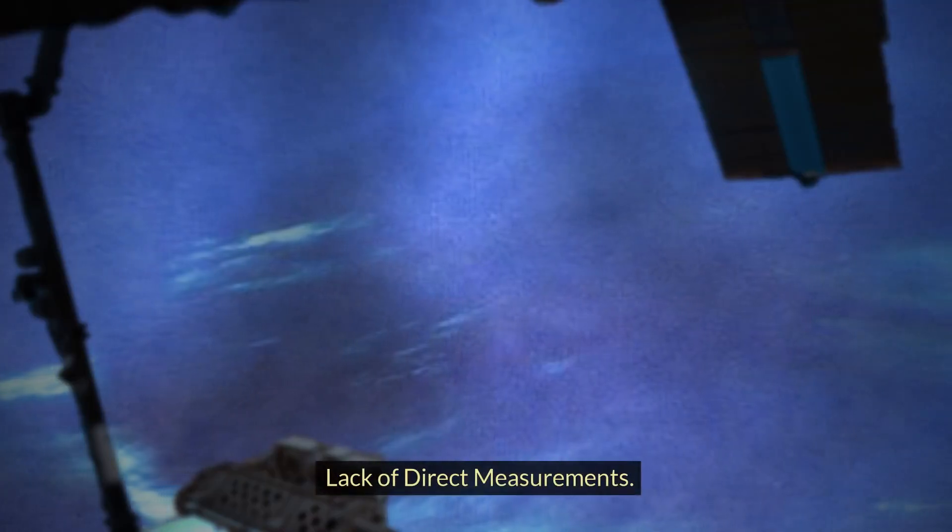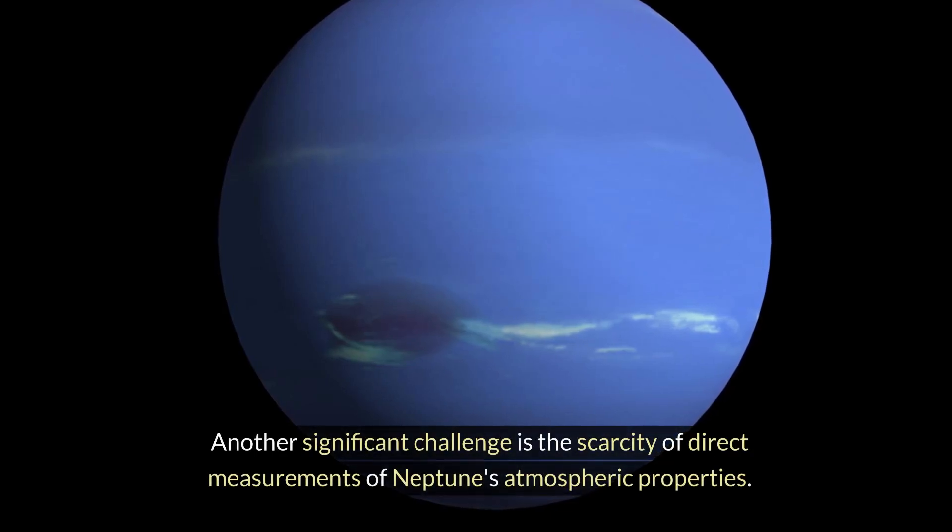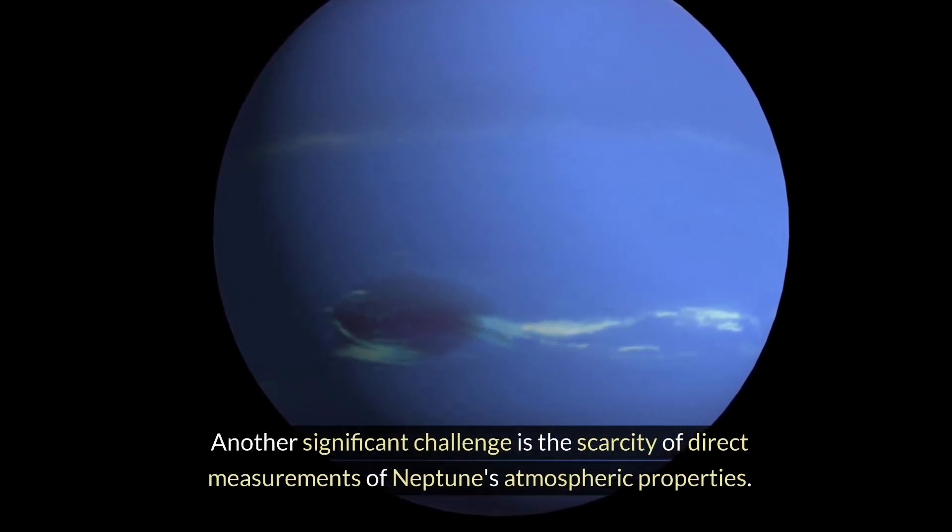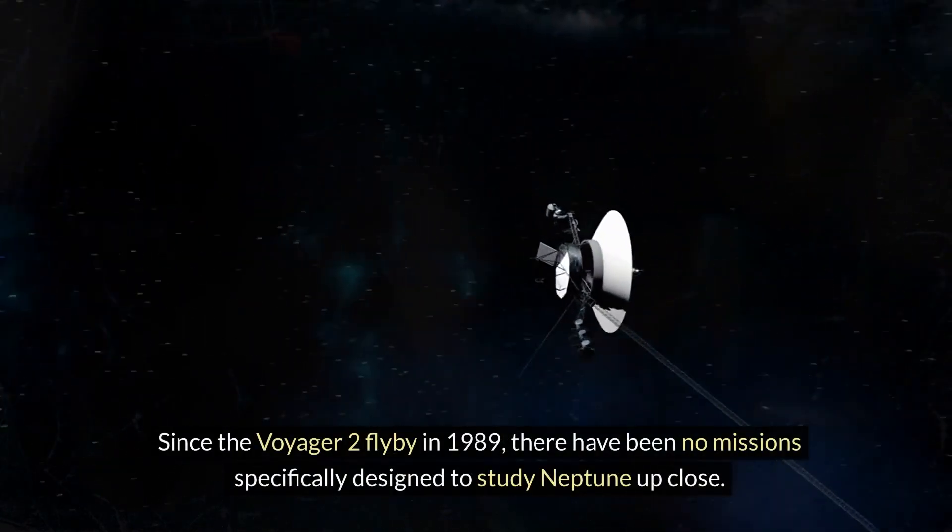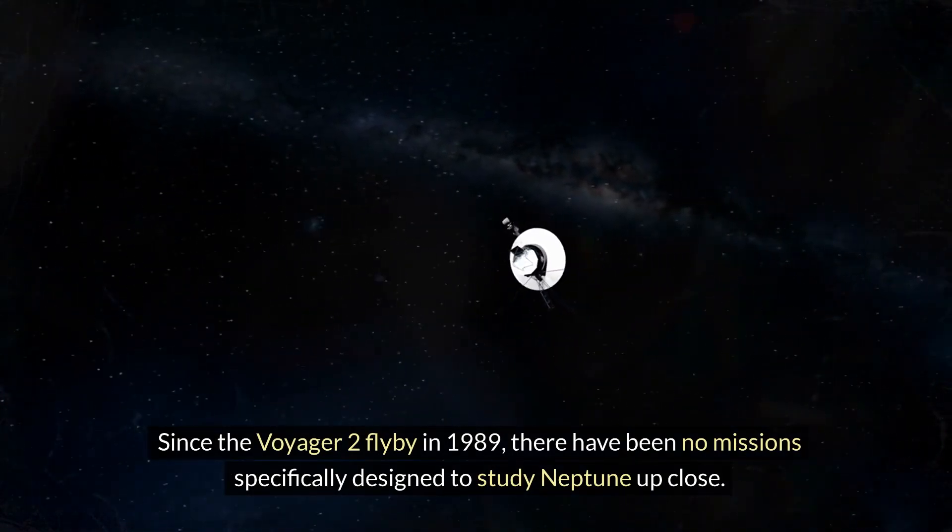Lack of Direct Measurements: Another significant challenge is the scarcity of direct measurements of Neptune's atmospheric properties. Since the Voyager 2 flyby in 1989, there have been no missions specifically designed to study Neptune up close.